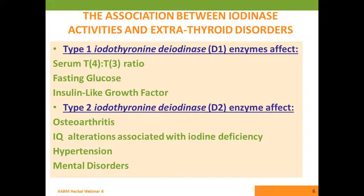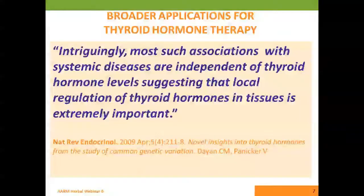Contrasting that, the type 2 iodothyronine deiodinase, or D2 enzyme, seems to be more involved with various inflammatory disorders outside of its role in producing thyroid hormones. Osteoarthritis is known to be affected by D2 levels. IQ alterations associated with iodine deficiency — such as cretinism, the congenital defect associated with low iodine status — are known to be affected by D2. Hypertension and mental disorders in general, such as cognitive decline and fuzzy thinking, also fall in this category. So D2 paints more of a picture of inflammatory diseases or tissue disruption.